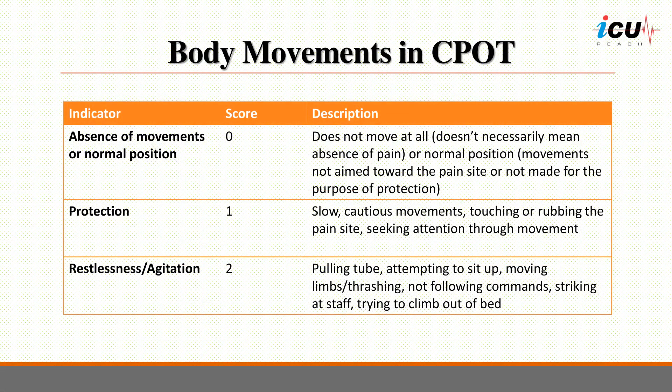Body movement is the second indicator in CPOT. A score of 0 is given when a patient is not moving at all or remains in a normal position as per the nurse's clinical judgment. A score of 1 refers to protective movements, meaning the patient performs slow and cautious movements and tries to reach or touch the pain site. A score of 2 is given when the patient is restless or agitated — exhibiting repetitive movements, trying to pull on tubes, trying to sit up in bed, or being non-collaborative. Of note, body movements are the less specific behaviors in relation to pain, but are still important in the whole evaluation of the patient's pain.